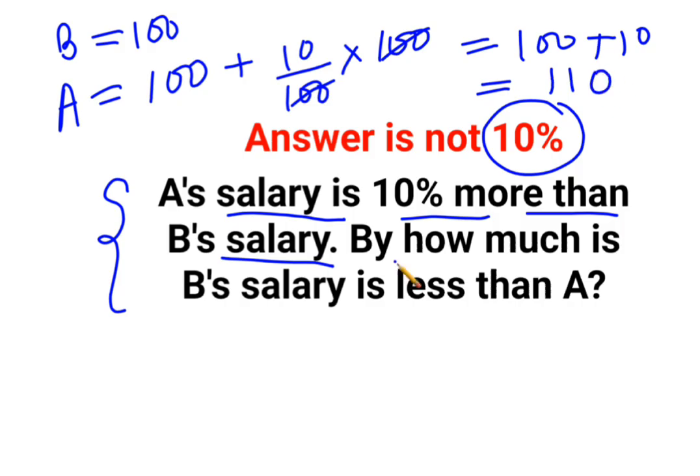Now they are saying by how much is B's salary less than A's salary. So now what is the difference? The difference is 110 minus 100. And the answer comes out to be 10.